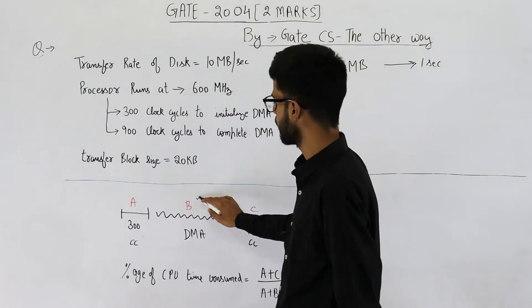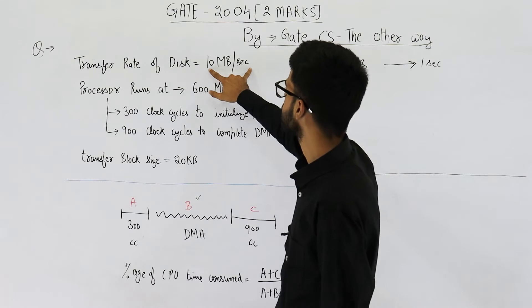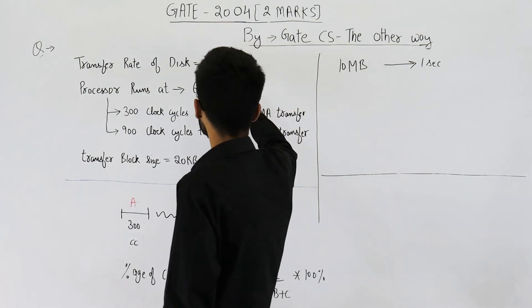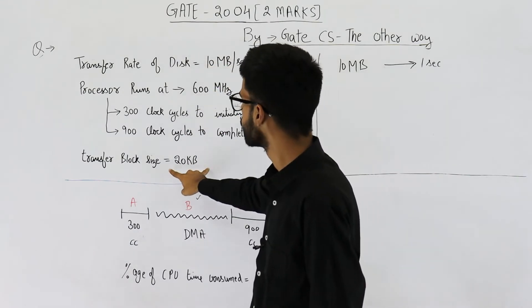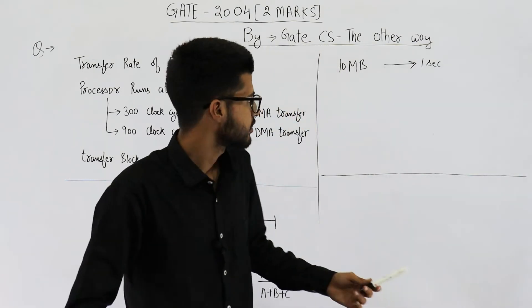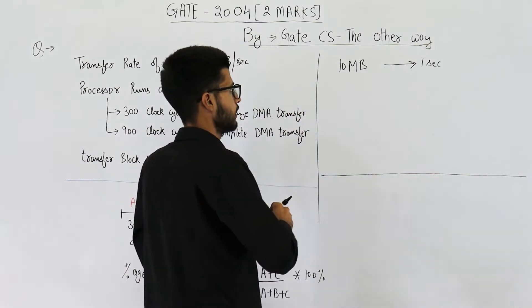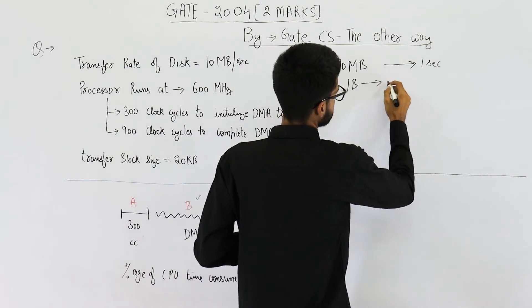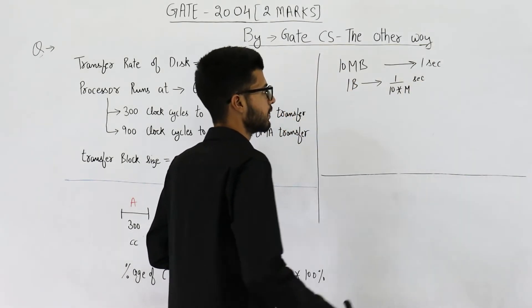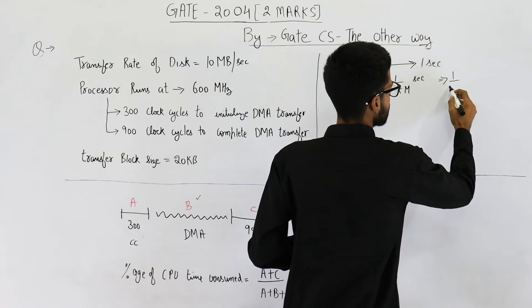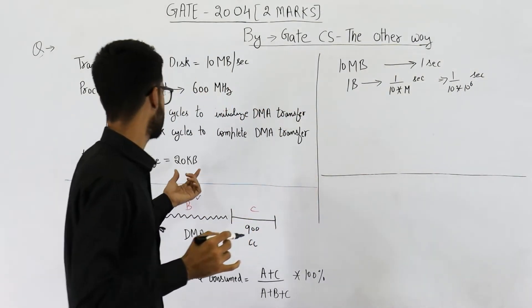Let's first determine what is B. That means how much time is taken for the actual data transfer? This will be determined by the speed of hard disk. Speed of hard disk is given as 10 MB per second. Let's find out. At this speed, how much time will one block take? One block is of 20 KB. Let's find it out. The speed is 10 MB per second. 10 MB take one second. One byte will take one upon 10M seconds. This will be one upon 10 into 10 raised to the power 6 seconds.